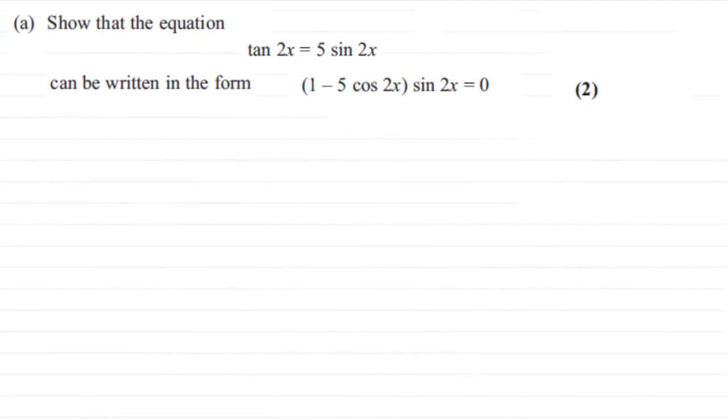Hi, what we have here in this first part of this question is to show that the equation tan 2x equals 5 sin 2x can be written in the form (1 minus 5 cos 2x) sin 2x equals zero.